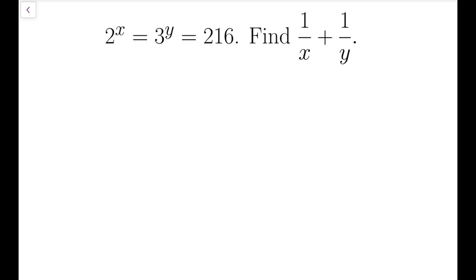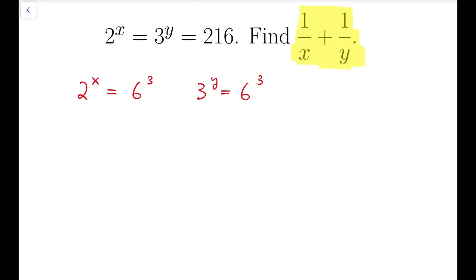Now I'm going to show you the second method. Again, we have two equations: 2 to the power of x equals 6 cubed, and 3 to the power of y equals 6 cubed as well. For this method, I'm going to start with the expression 1 over x plus 1 over y, and rewrite that as x plus y divided by xy — combining them into one single fraction.